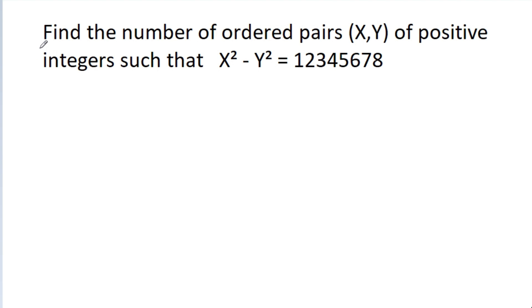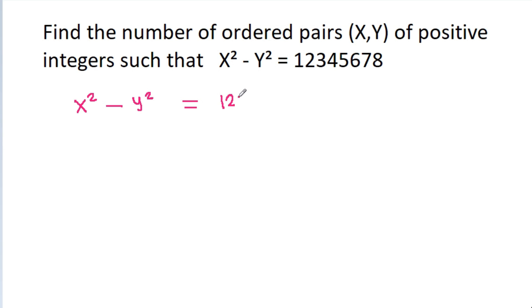In this video, we have to find the number of ordered pairs (x, y) of positive integers such that x squared minus y squared is equal to 12345678.